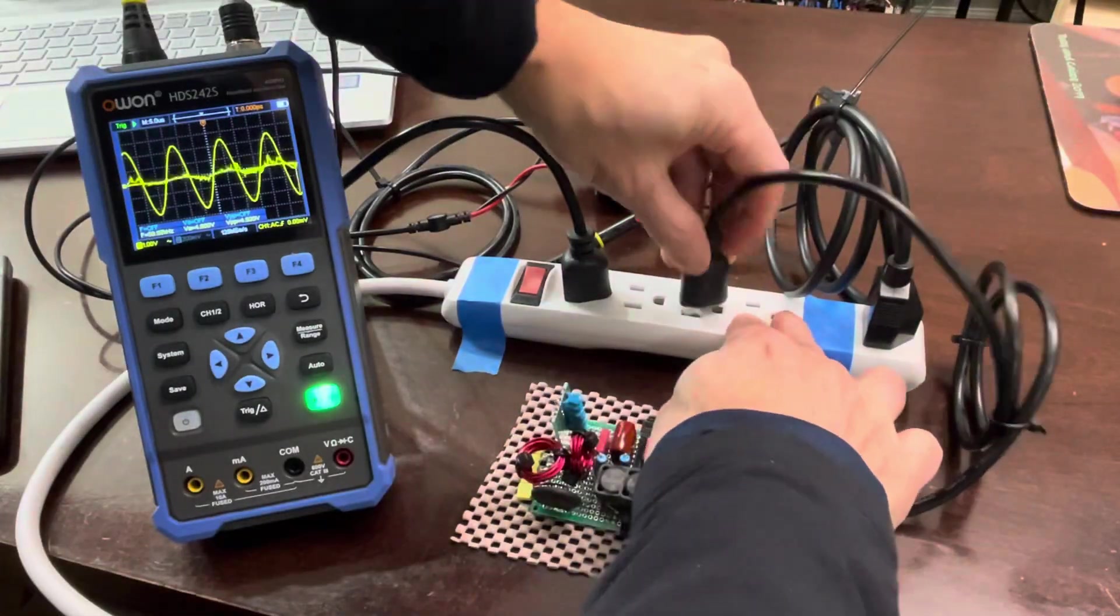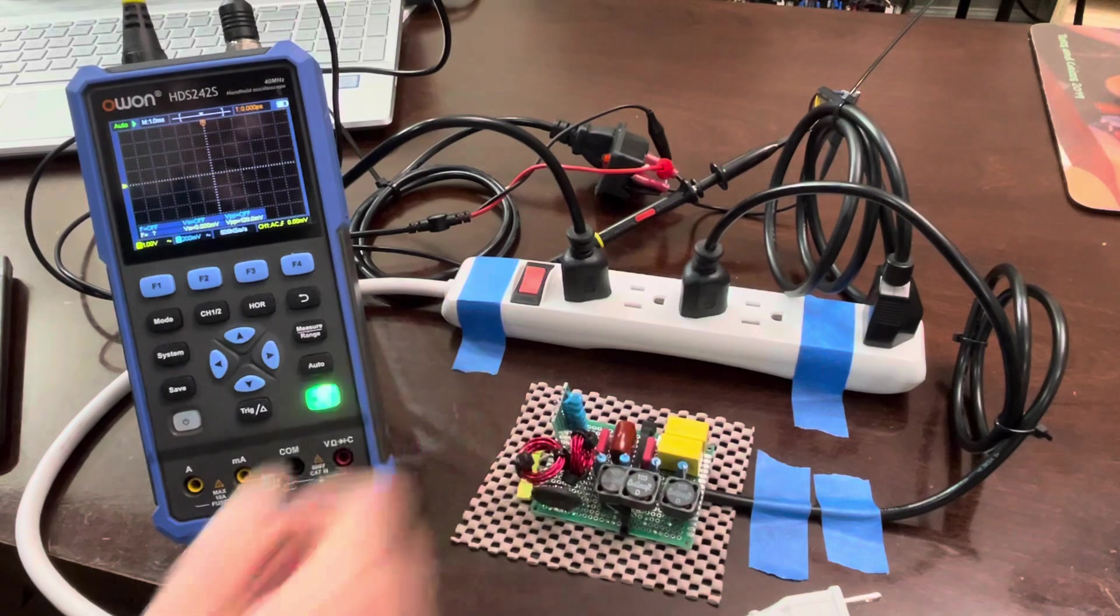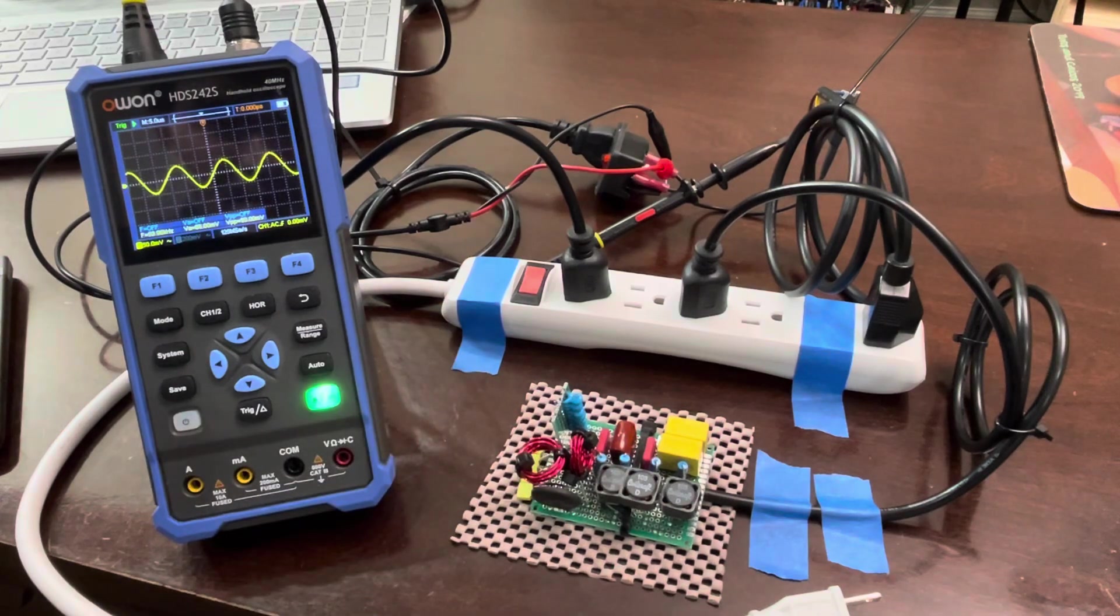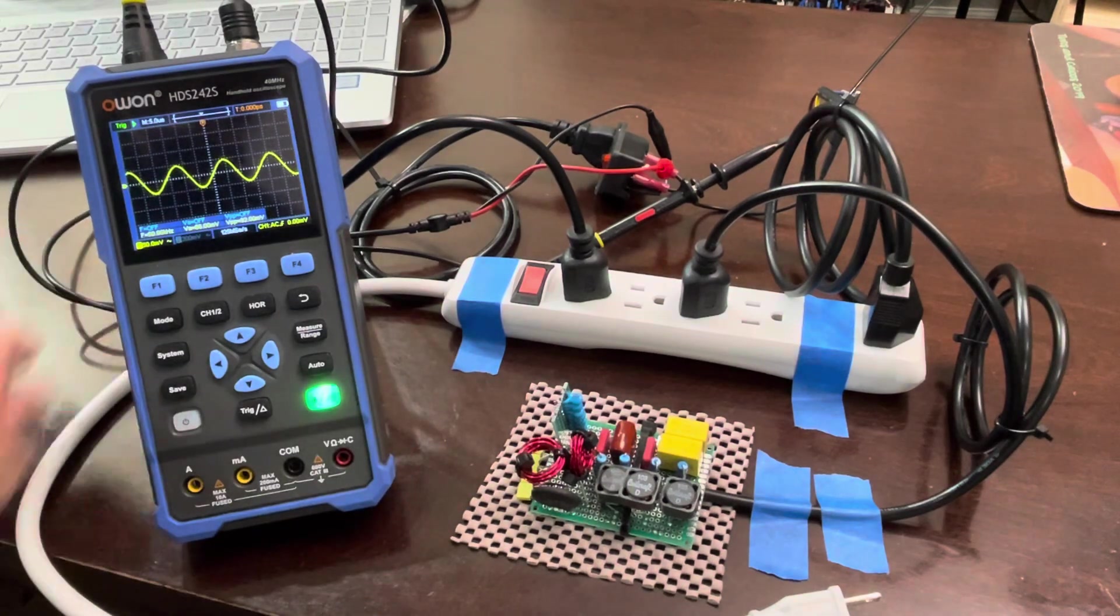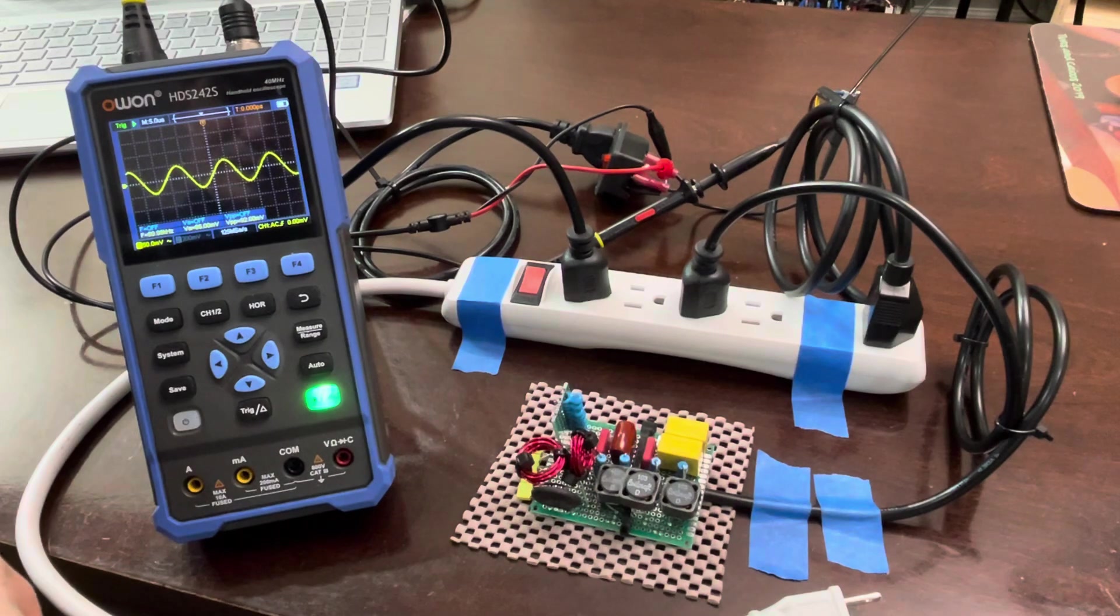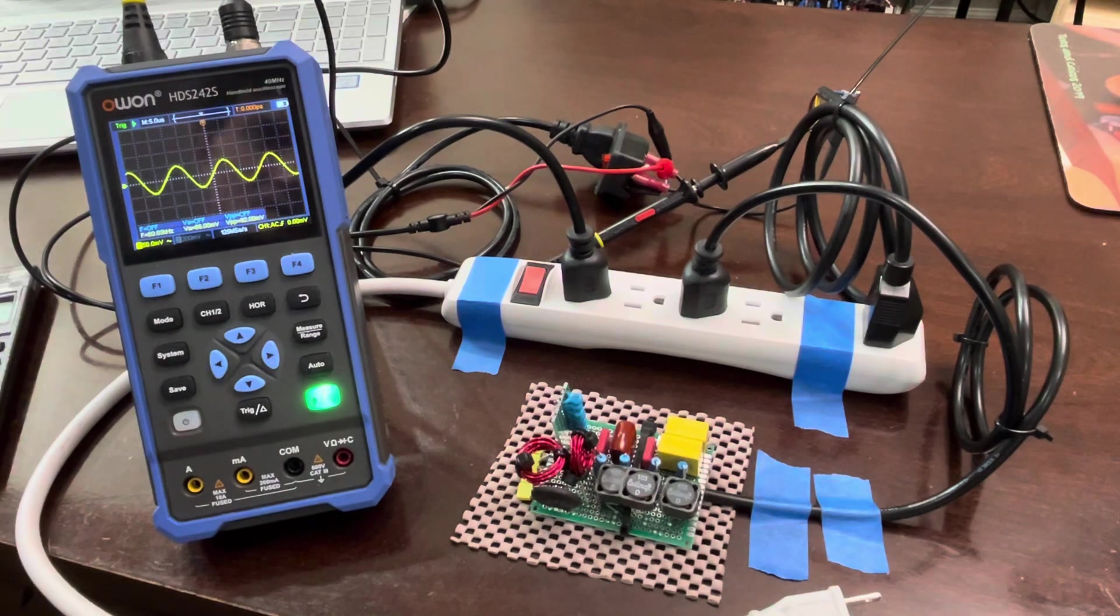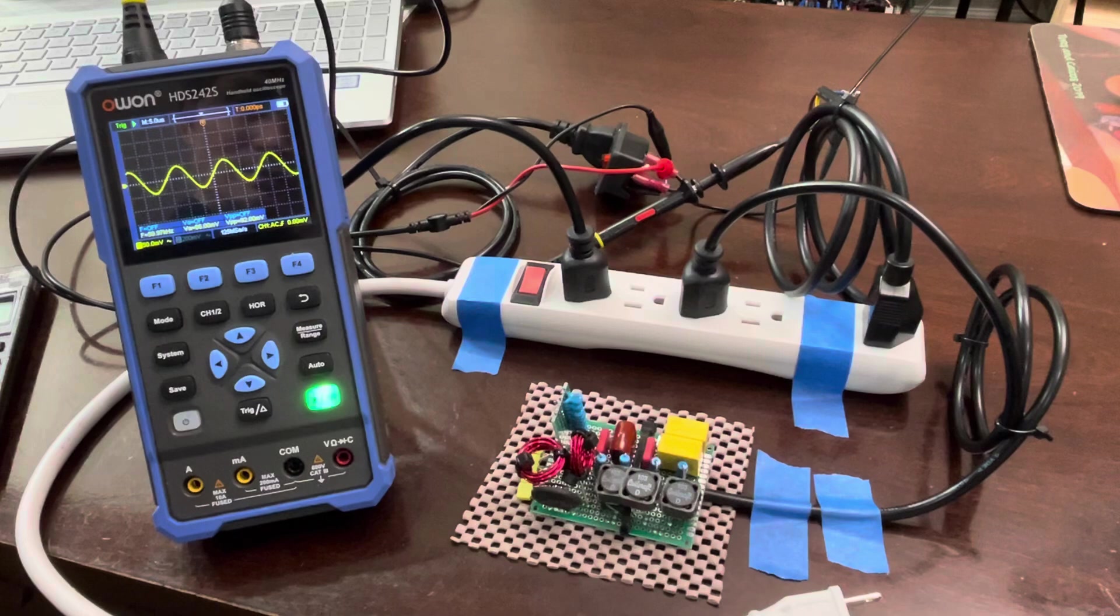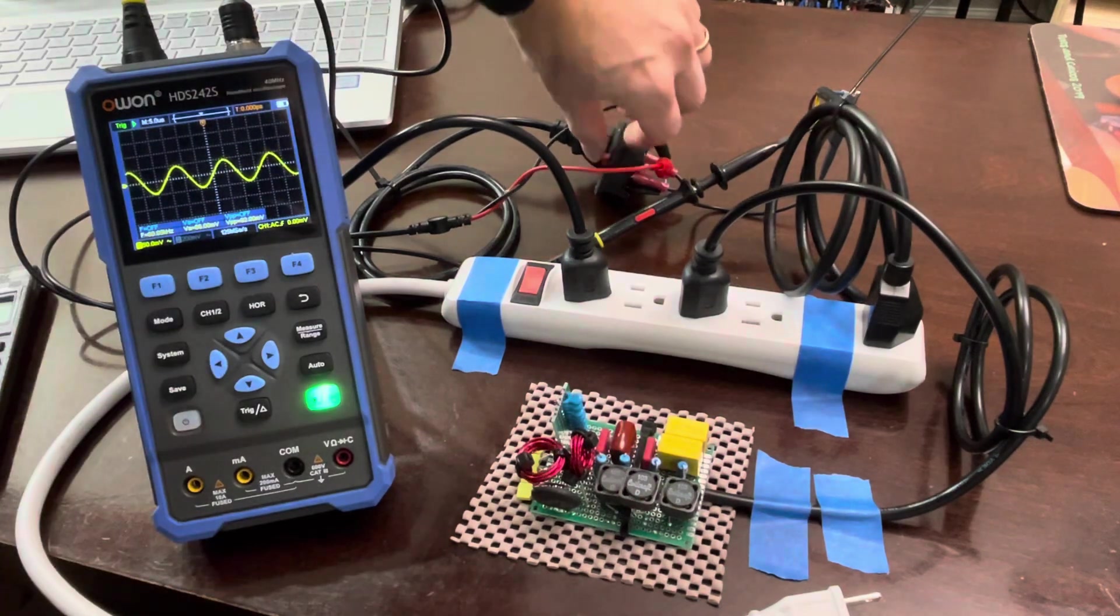We're at 4.92 volts. Put the filter in. Reacquire. 90 millivolts. So we're at 90 millivolts. 92, I'm sorry - 94 now. 94, 4.92 divide. Take the log of that times 20. That's negative 34 dB. So yeah, it's working really well. And I think that you will notice some improvement if you are hearing switch mode power supply noises in your power line.